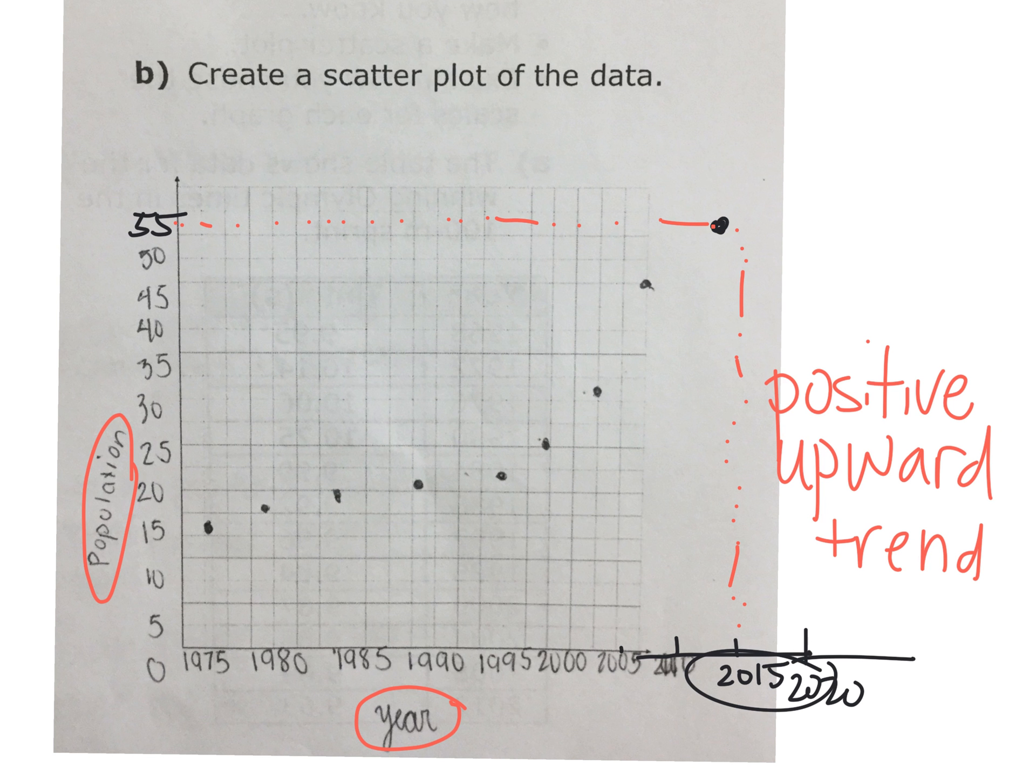What about in 2020, in the future? It will be higher. It will be higher. So what do you think it might be? Maybe somewhere around here. Maybe around 60,000 people. If this follows the same trend, we can make predictions about the future. We can say that in 2020, this town might have a population of 60,000.